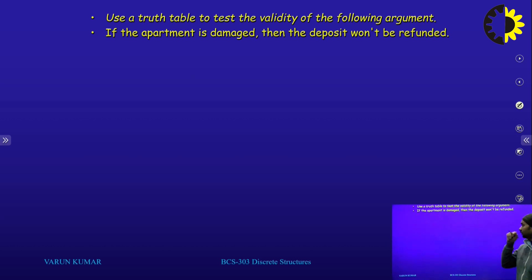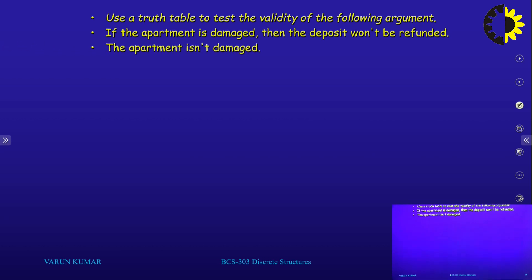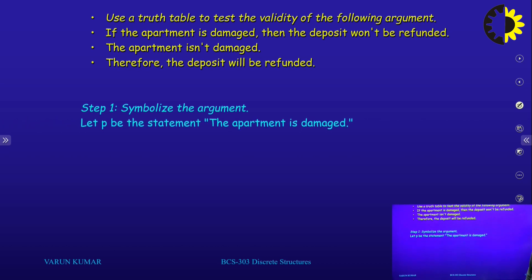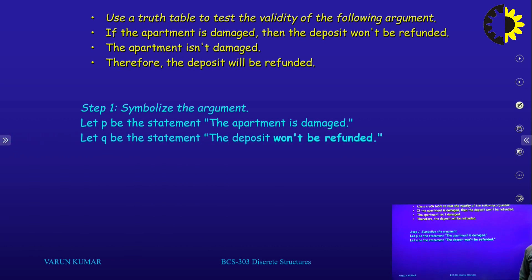Use a truth table to test the validity of the following argument: my first argument is 'if the apartment is damaged, then the deposit will not be refunded.' My second statement is 'the apartment is not damaged.' Then my conclusion is 'therefore the deposit will be refunded.' Is my conclusion valid?